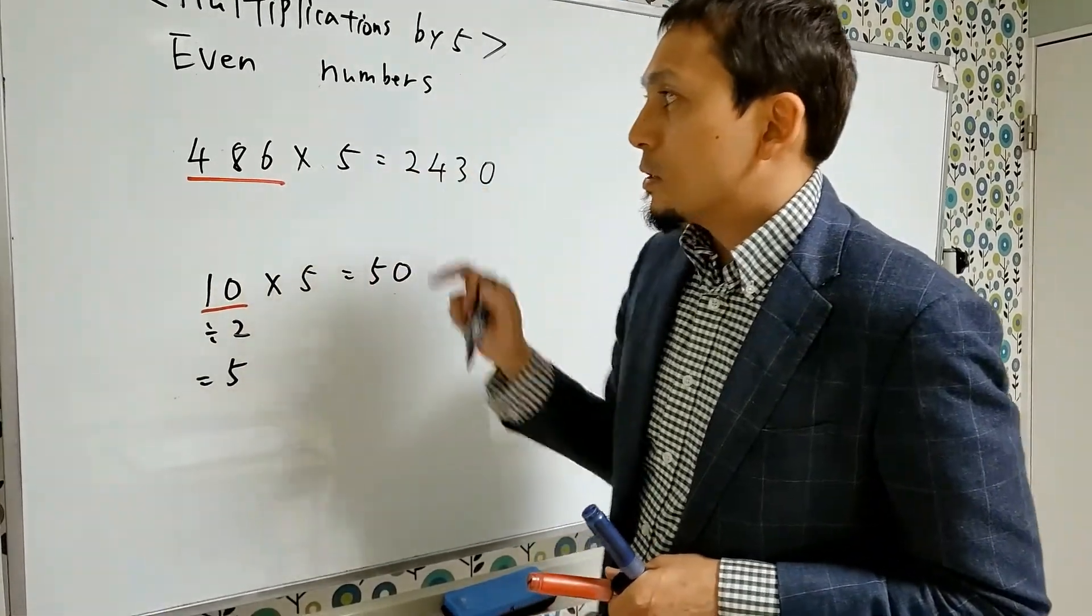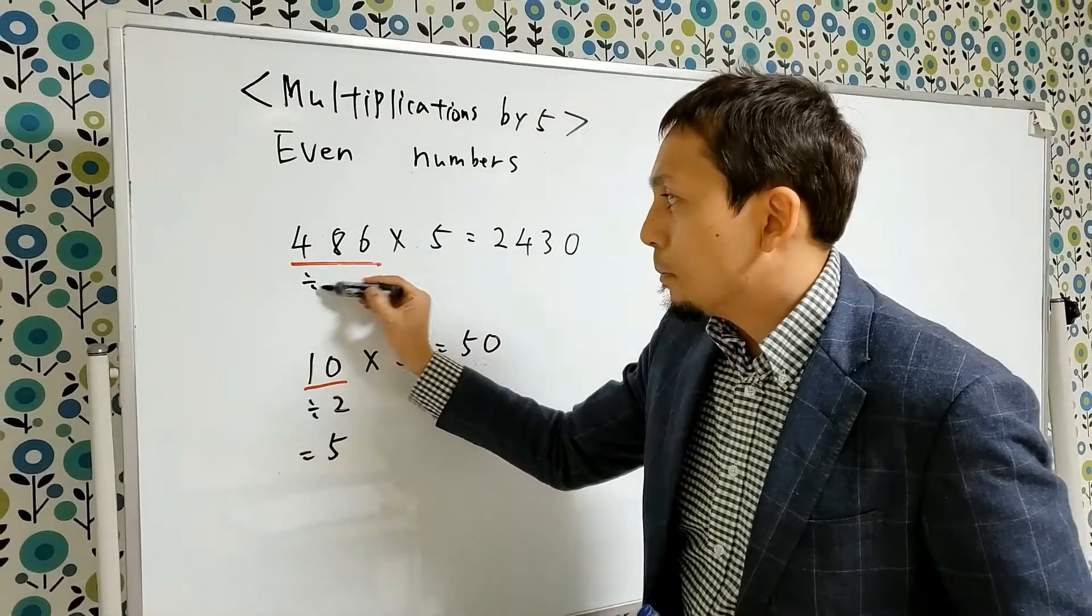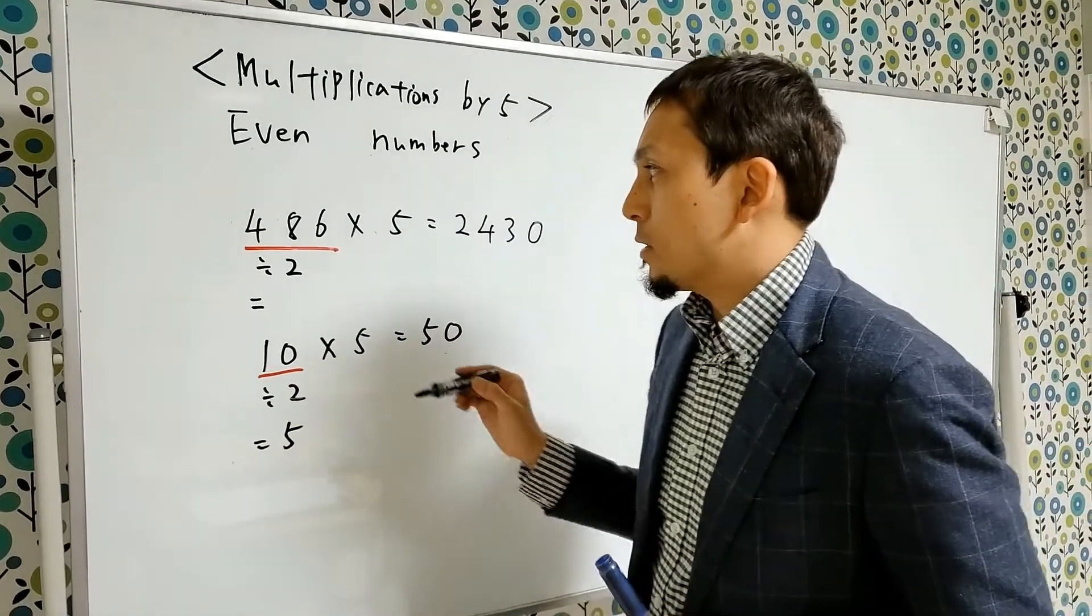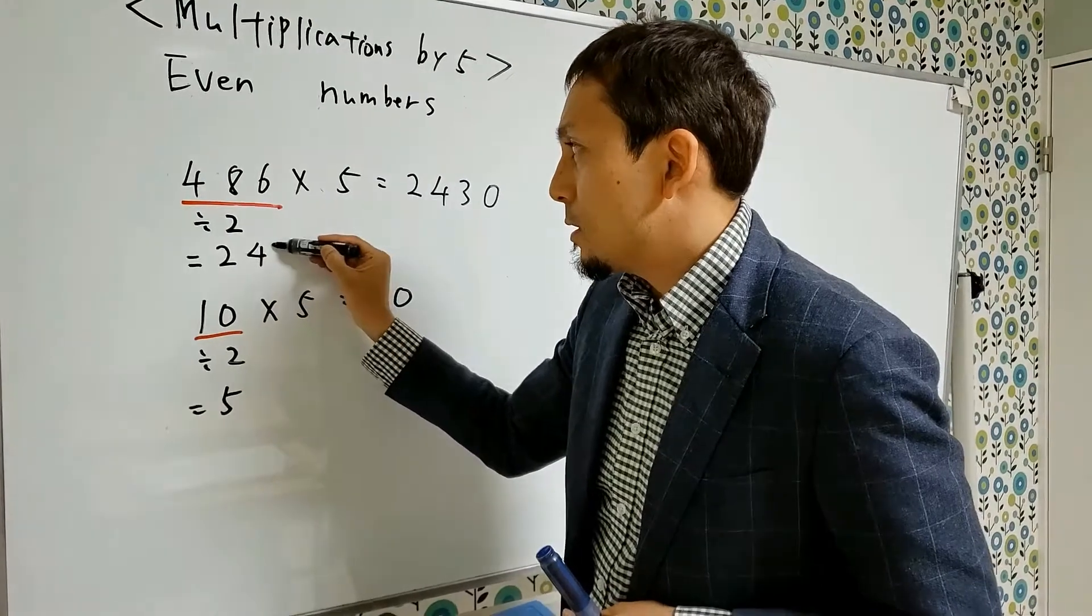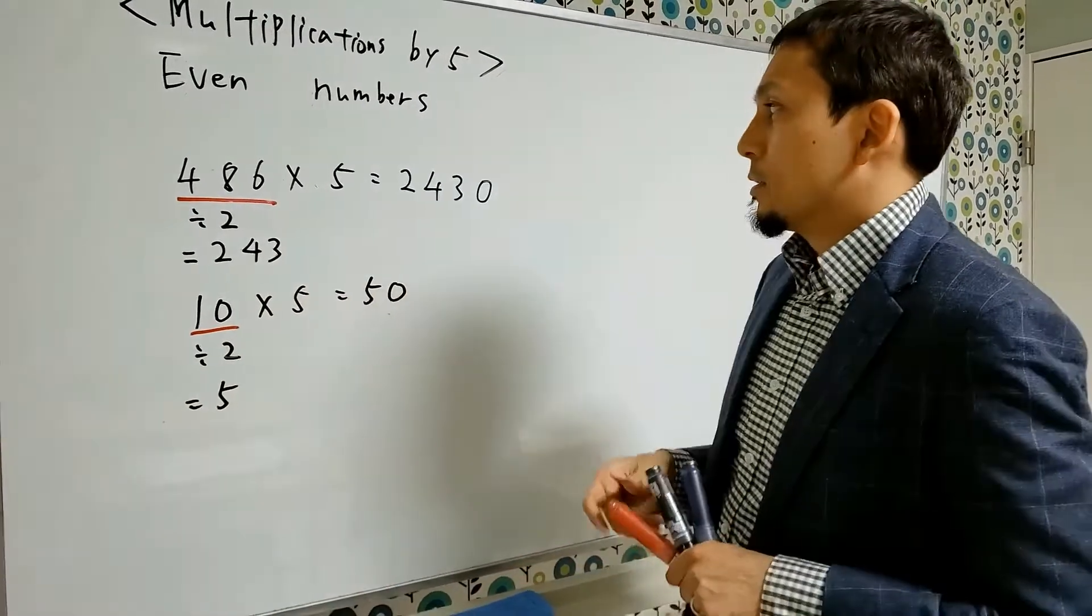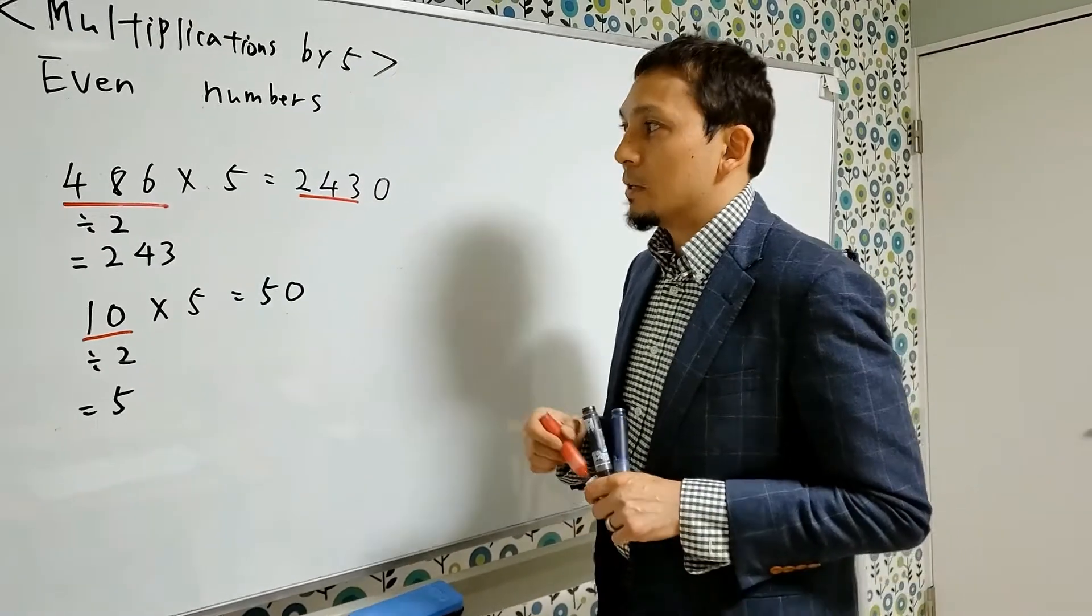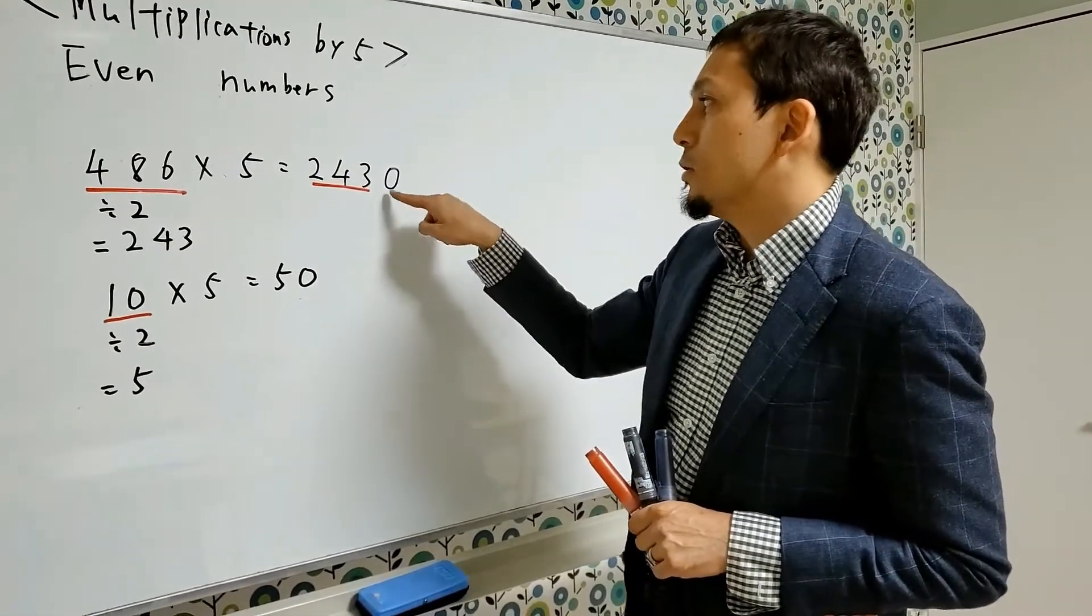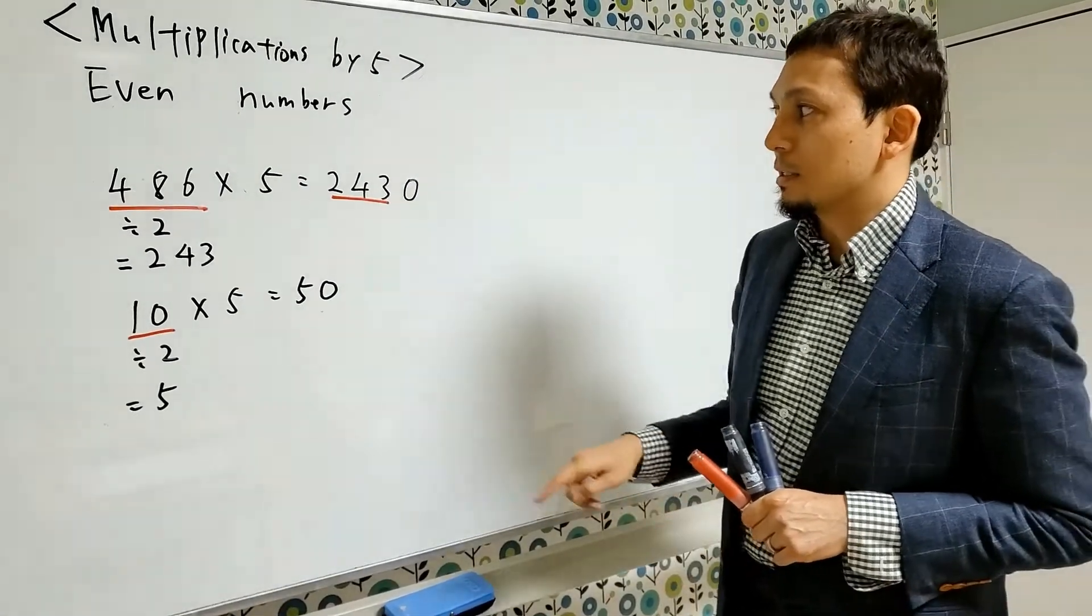Okay, the first step is to divide 486 by 2. Then you get the result 243. So write the number 243 here like this. And after that, don't forget to add 0 to the units place like this. Then you get the right answer like this.